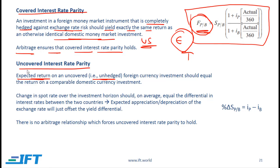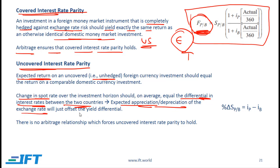The key difference between uncovered and covered interest rate parity is that with uncovered interest rate parity we are talking about an expected return, whereas with covered interest rate parity we arrive at a precise forward rate. According to uncovered interest rate parity, the change in the spot rate over the investment horizon should on average equal the differential in interest rates between the two countries — in other words, expected appreciation or depreciation of the exchange rate will just offset the yield differential.